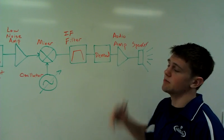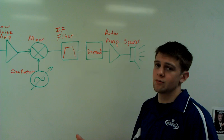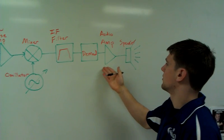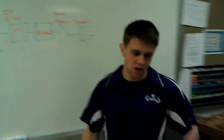That signal is then sent to a demod where it takes the encoded information and turns it back into audio. Then we pass it through an audio amp, and then to a speaker. Let me show you the finished project.